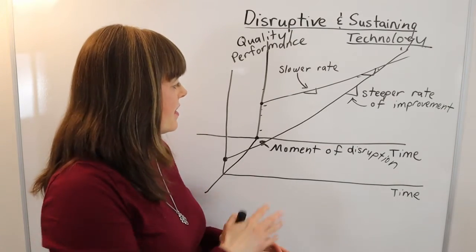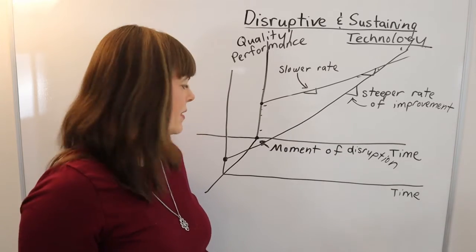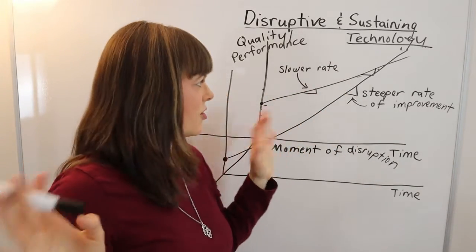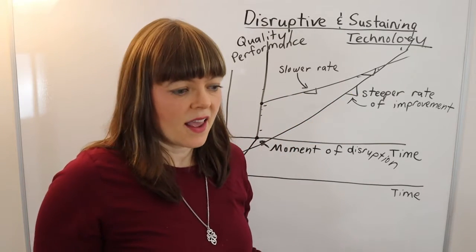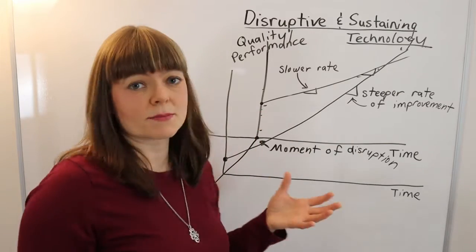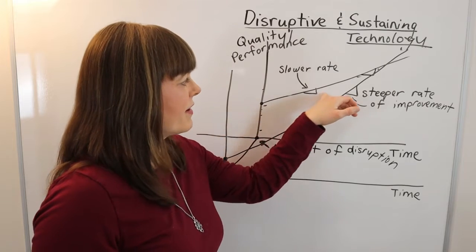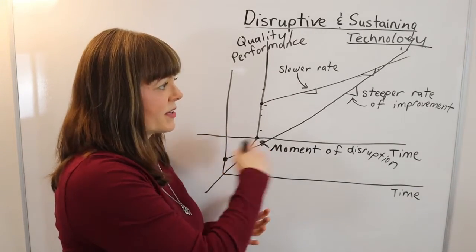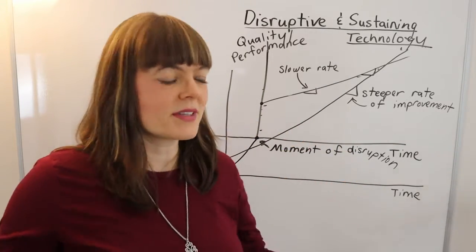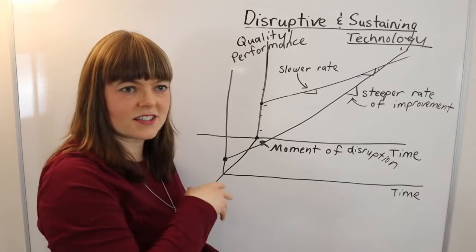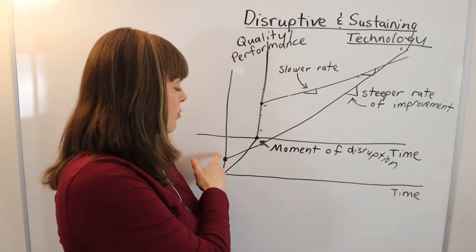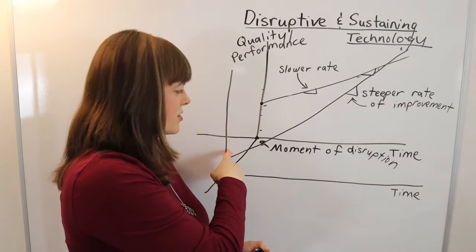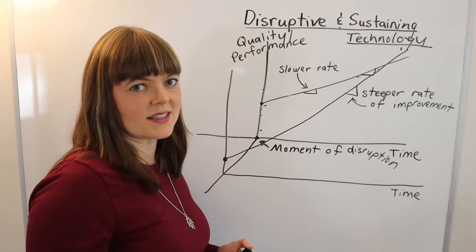One of the points Christensen makes about disruptive technologies is that it tends to be different companies doing the disrupting. The company creating the big fancy computer sold only to large corporations and universities — they had a customer base they liked, and a business model that served that customer base well by developing innovations on that particular product. If they tried to disrupt themselves, they'd be putting their own business model out of business down the road, which isn't always a great move. Also, creating technologies that serve the broader population is a different business model. To do this disrupting, you need a business model aimed at cost reduction, not quality improvement — and that requires different processes.